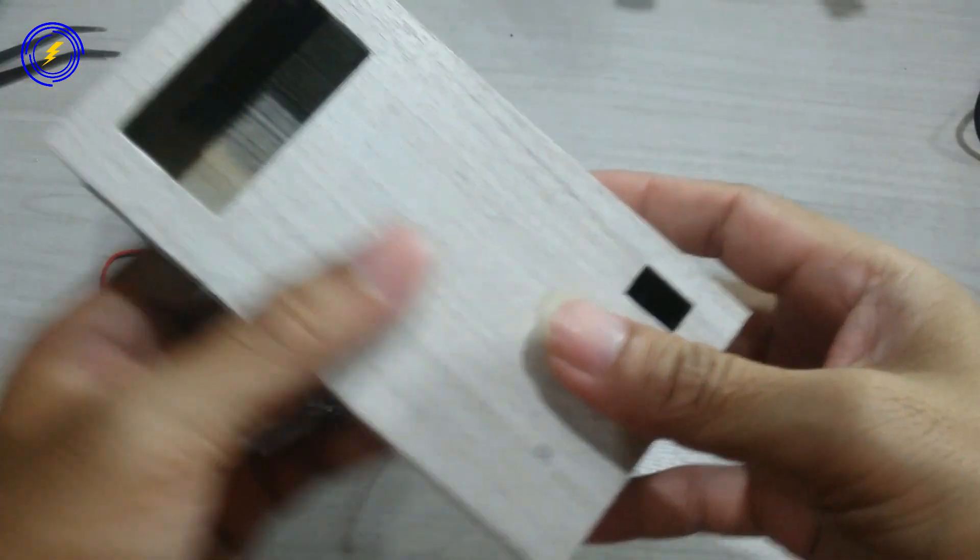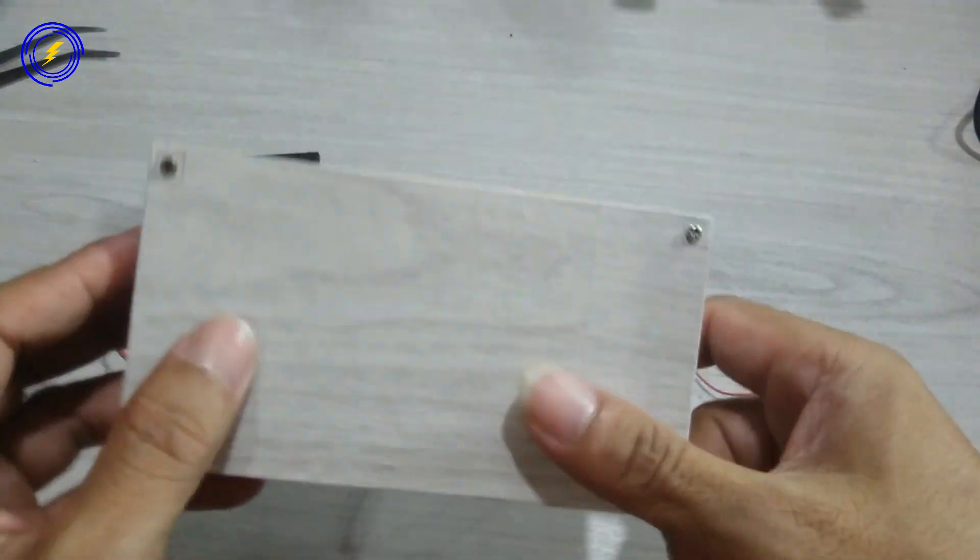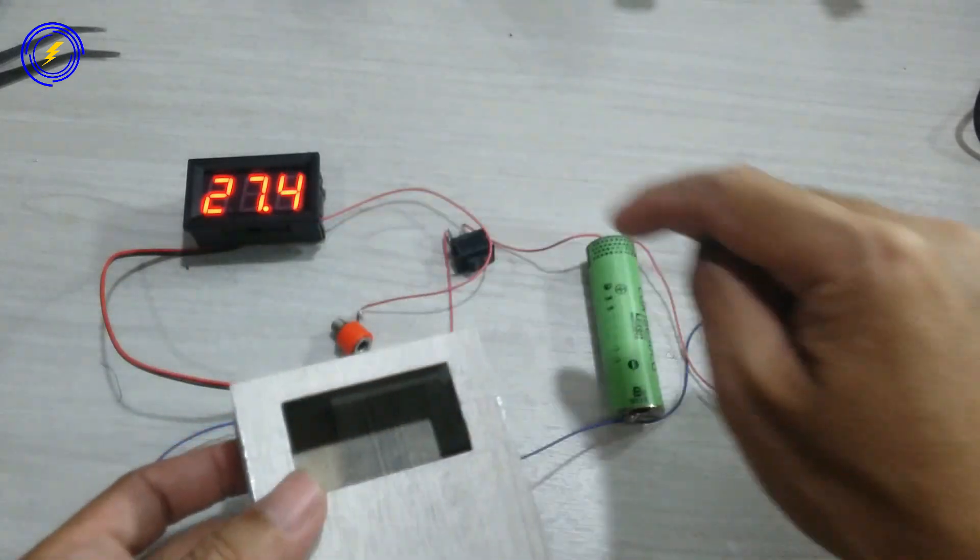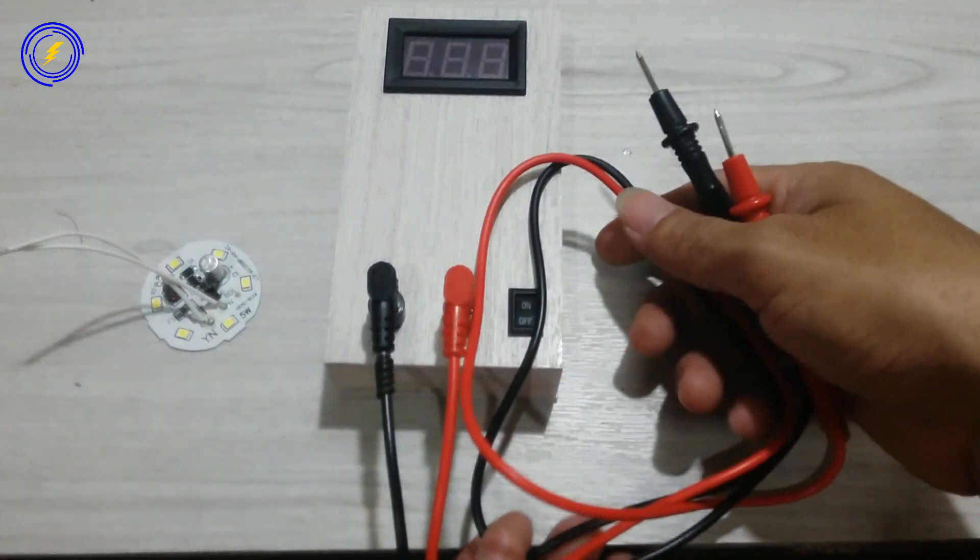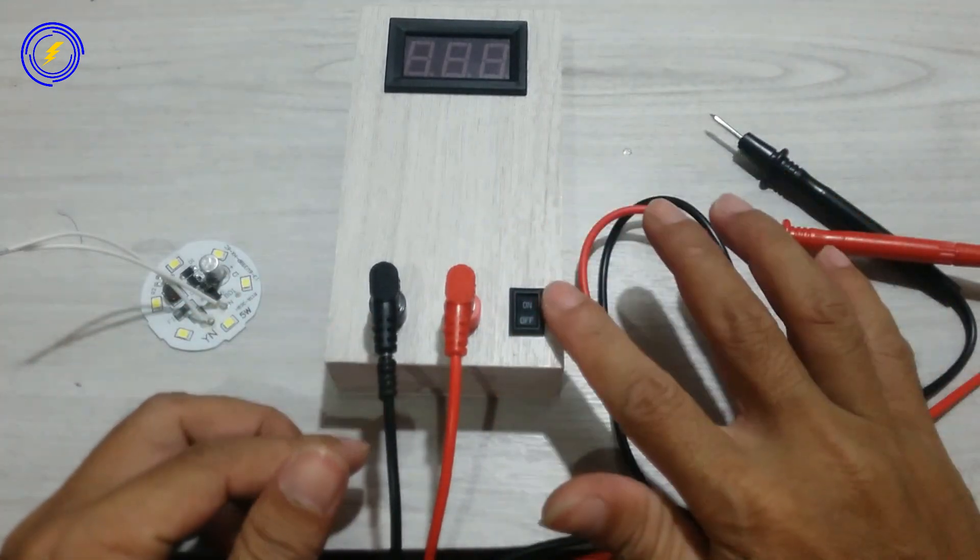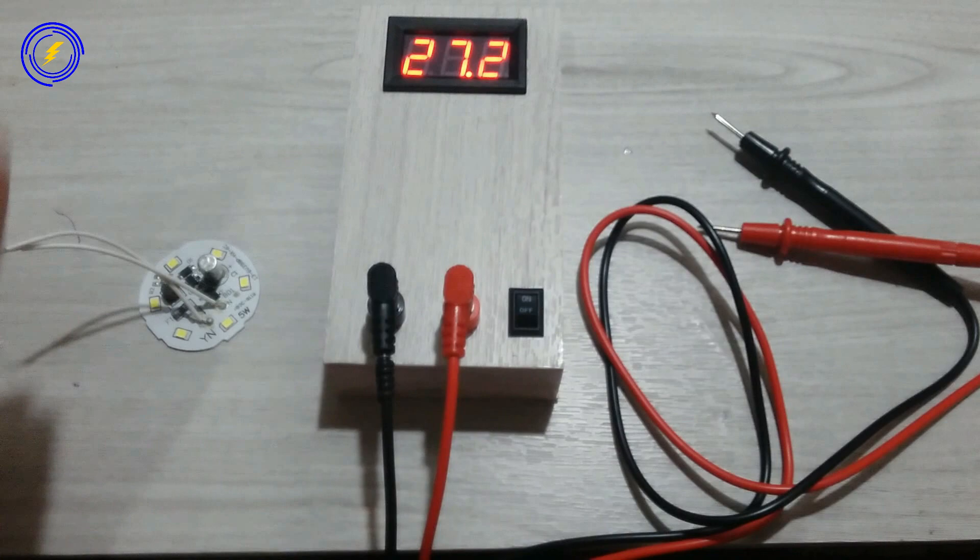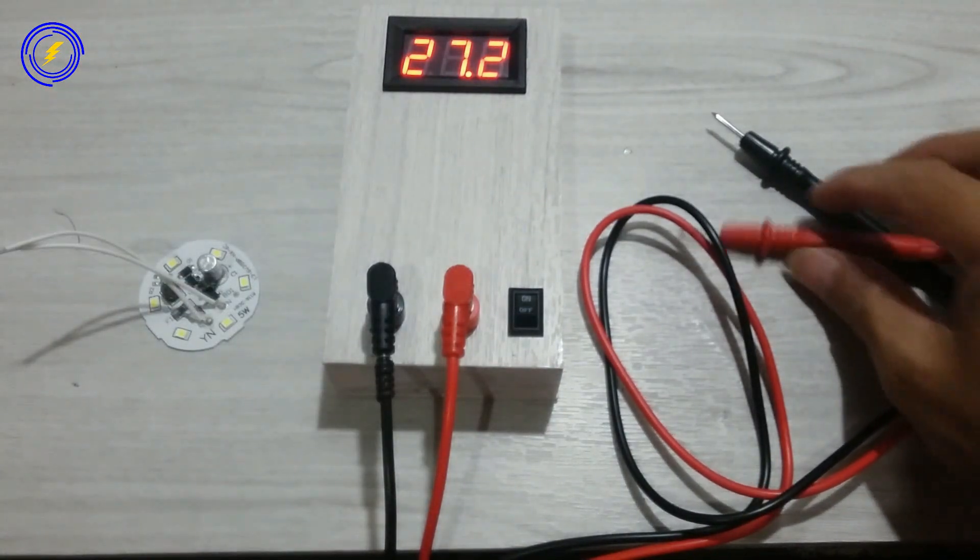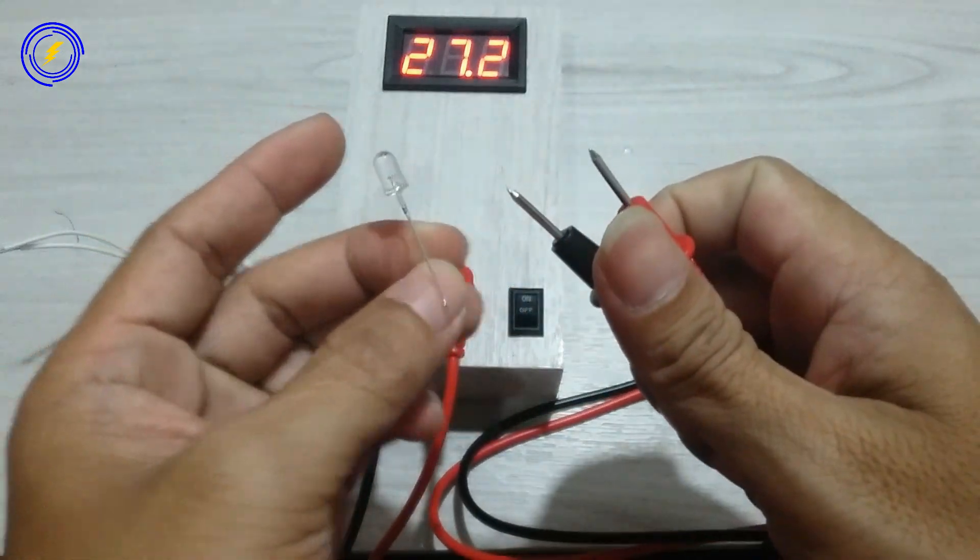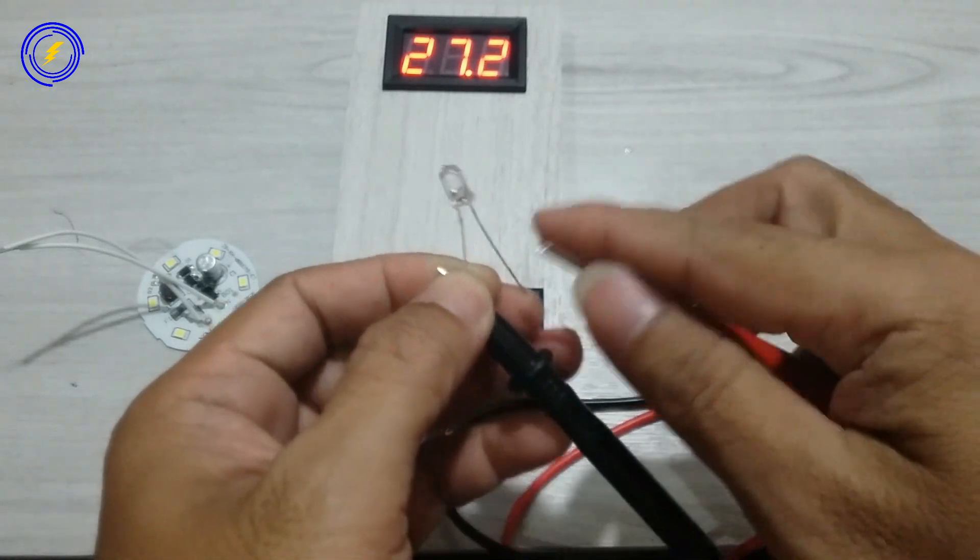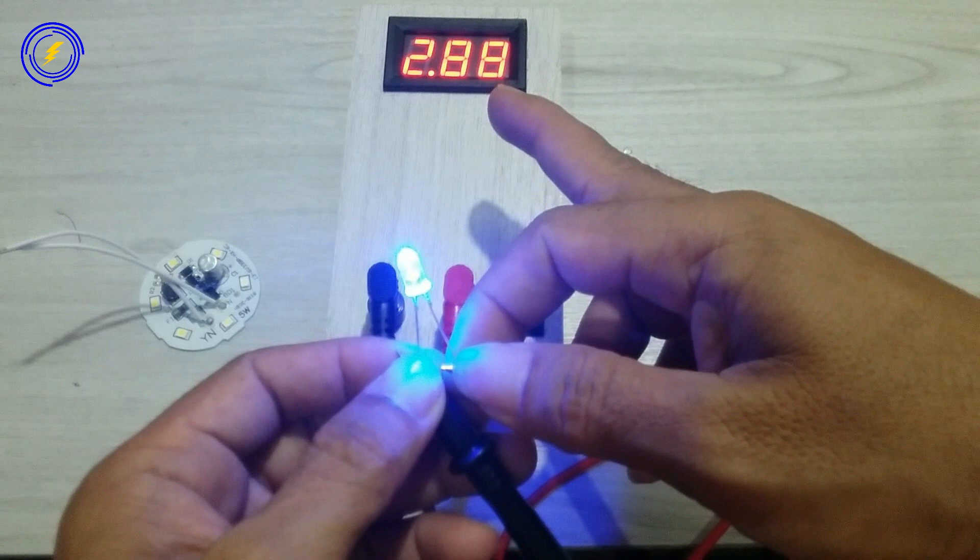Saya sudah menyiapkan sebuah wadah. Kita akan masukkan ke dalam wadah ini supaya rapi hasilnya. Ini sudah saya masukkan kedalam wadah. Hasilnya seperti ini. Kita nyalakan dulu, kita coba tes LED. LED terbaca 2,8 Volt.